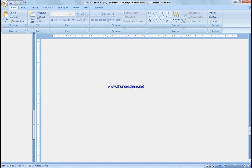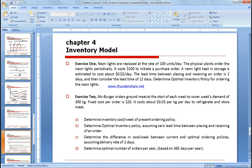Let's do inventory management example one. Neon lights are replaced at the rate of 100 units per day, and the facility plans to order the neon lights periodically. It costs $100 to initiate a purchase order. They're kept in storage, the lead time is two days, and we'll consider 12 days to determine the optimal inventory policy.